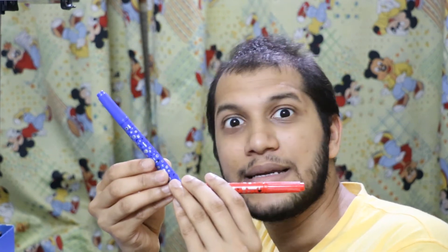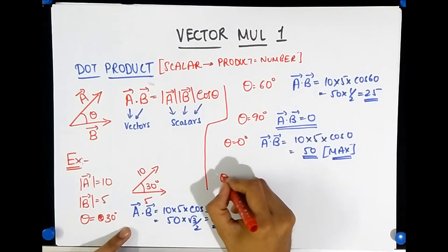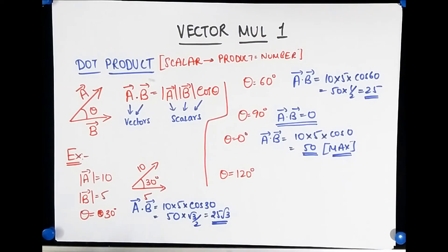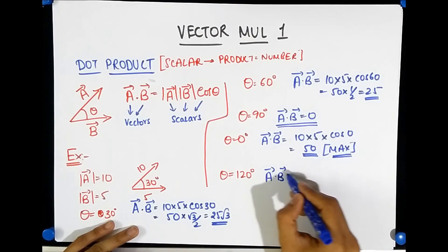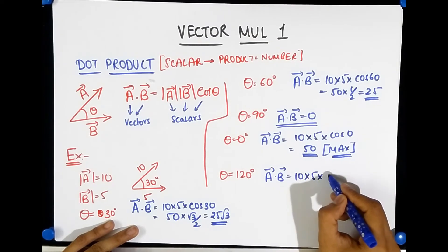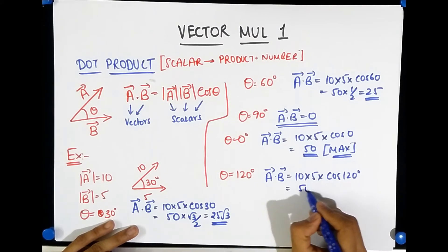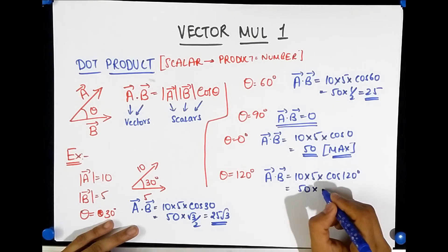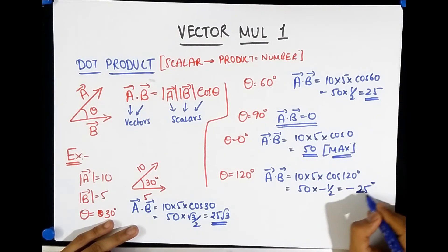What do you think would happen if the angle were to become more than 90 degrees? Let's find out. What would happen if theta were more than 90? Let's say it was 120 degrees maybe. In that case, A dot B would be 10 multiplied by 5 multiplied by cos of 120 degrees. That would be 50 into cos of 120, allied angles, is the same as negative cos 60, which is minus half. That is minus 25.